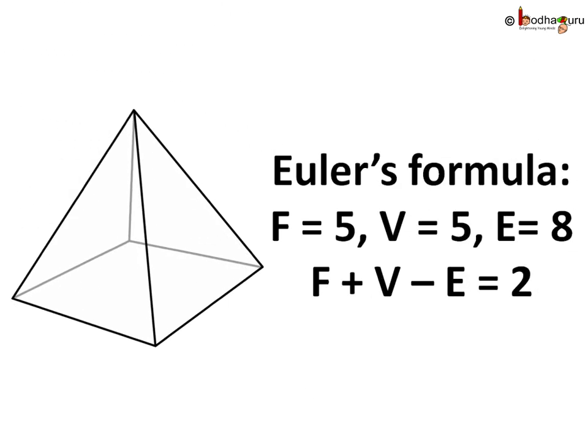For example, in a quadrangular pyramid there are 5 faces: F equals 5, vertices equals 5, and edges equals 8. So, 5 plus 5 minus 8 equals 2. It satisfies Euler's equation which states F plus V minus E equals 2.